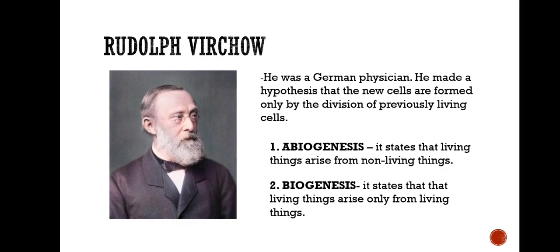Rudolf Virchow was a German physician. He made a hypothesis that new cells are formed only by the divisions of previously existing living cells. In Virchow's words: omnis cellula e cellula.